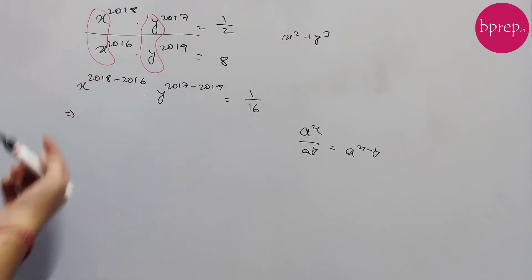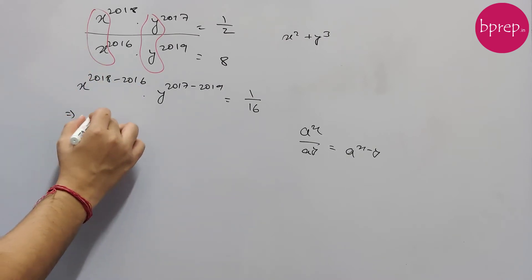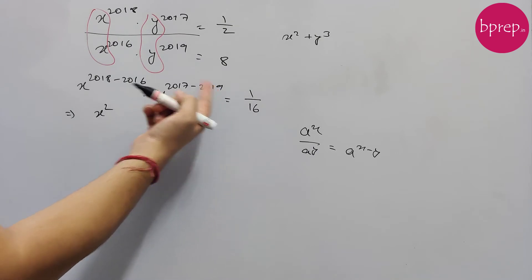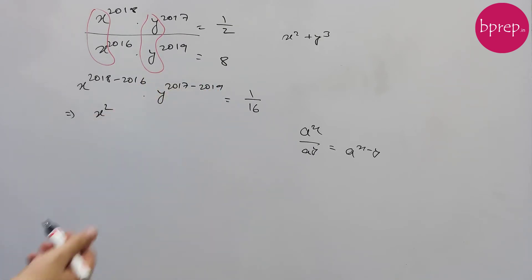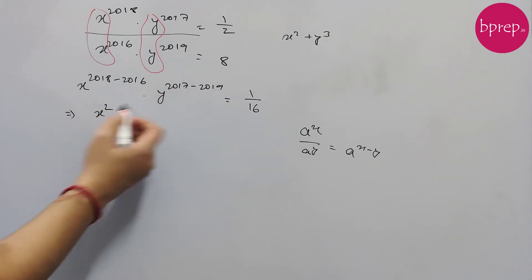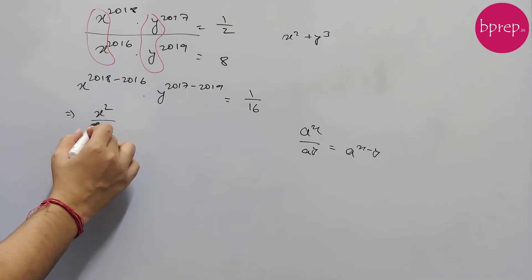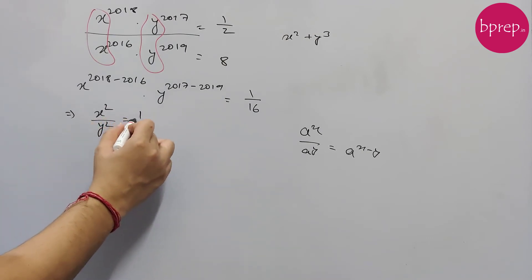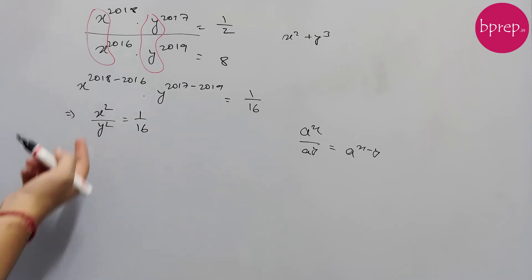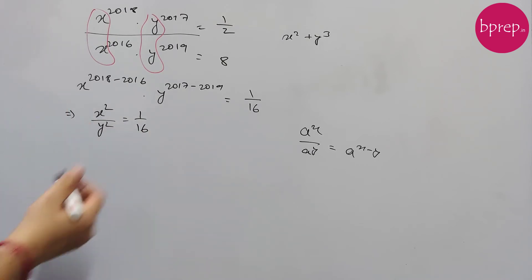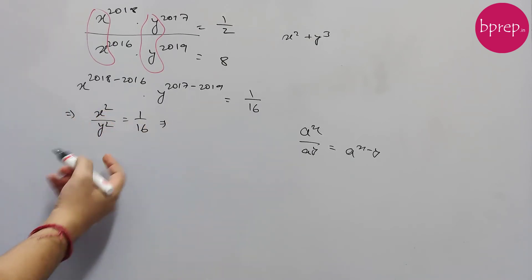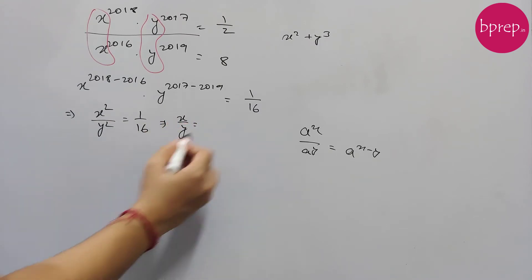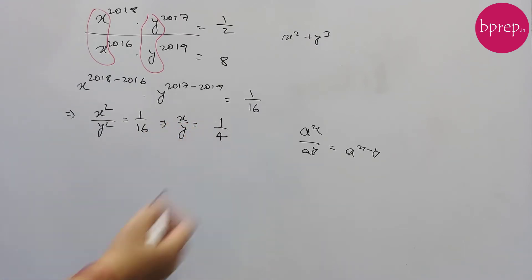Now, 2018 minus 2016 equals 2, giving us x squared. And 2017 minus 2019 equals negative 2, so we get y to the power minus 2, which can be written as 1 over y squared. So we have x squared divided by y squared equals 1/16.